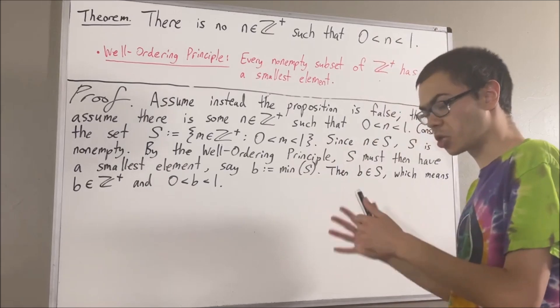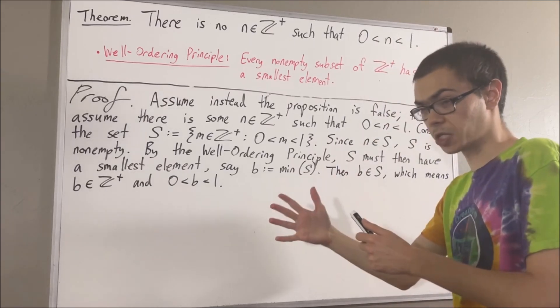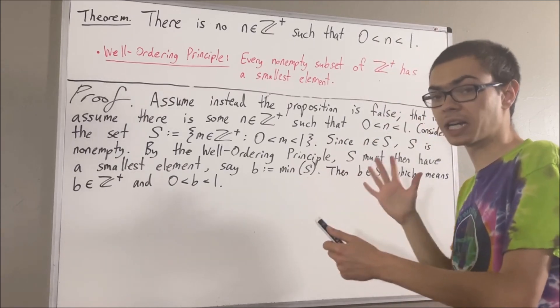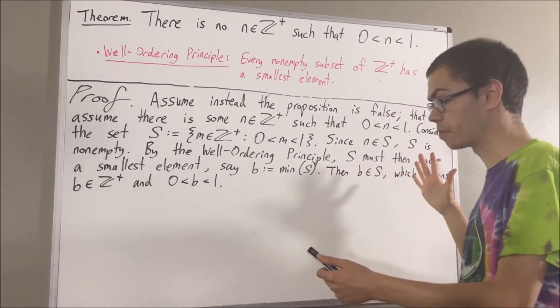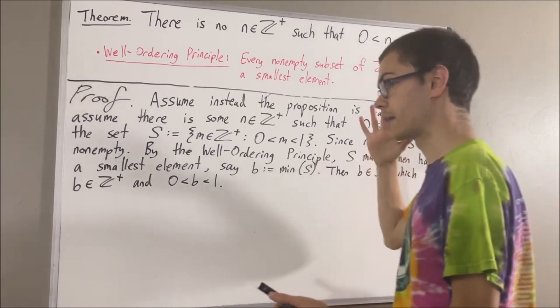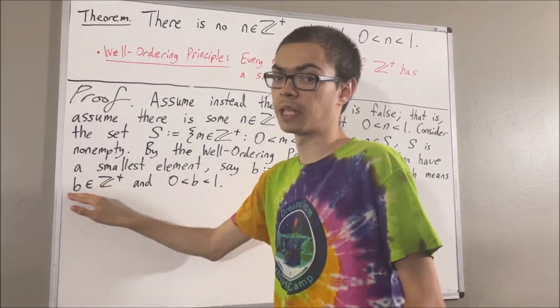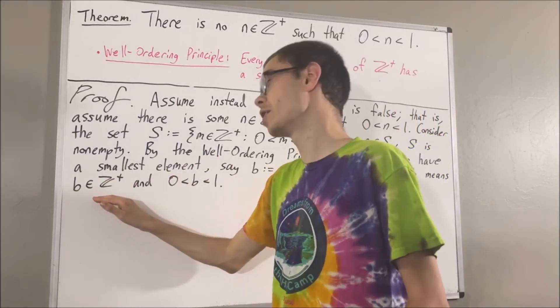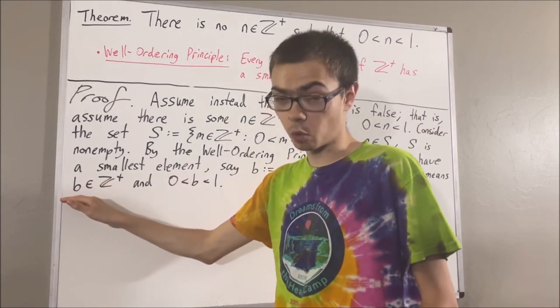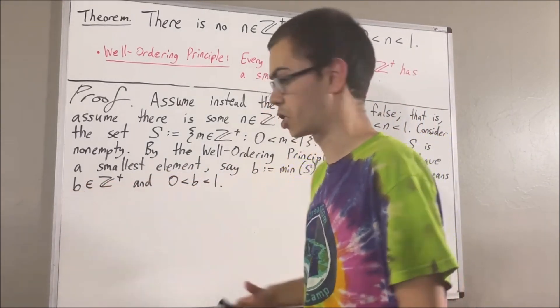A positive integer times a positive integer is a positive integer, so that means that b times b is a positive integer. In other words, b squared is a positive integer.